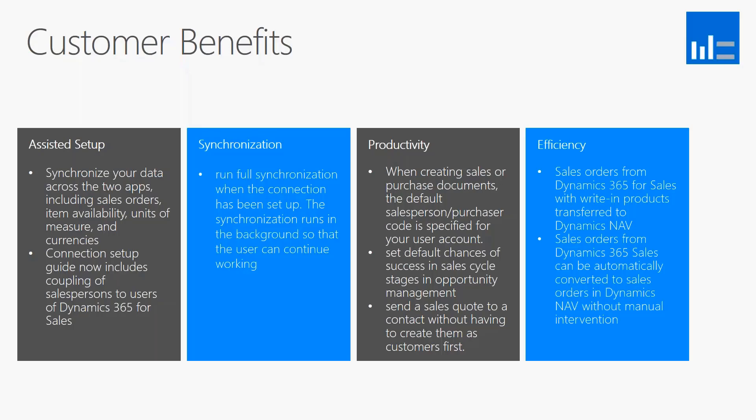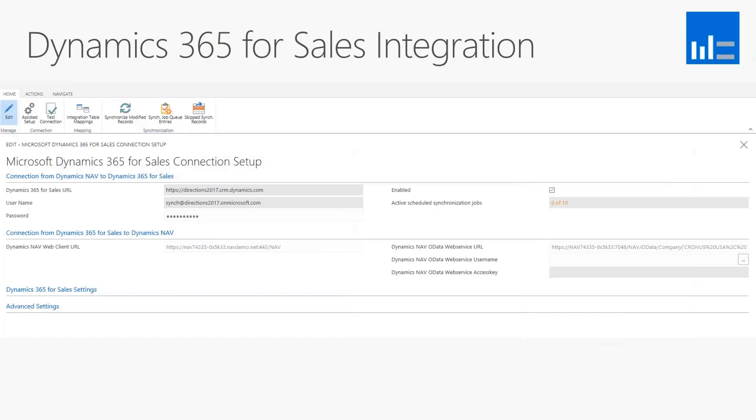The other major improvement is around the sales order workflow. In 2016 and 2017, when a sales order was created in CRM, it would come down to NAV and sit in a holding table for somebody to review and click a button to convert it to an actual sales order. They've streamlined that process — no longer is there that additional intermediary step. Upon creating the sales order in CRM, the synchronization brings it directly into a sales order in NAV.